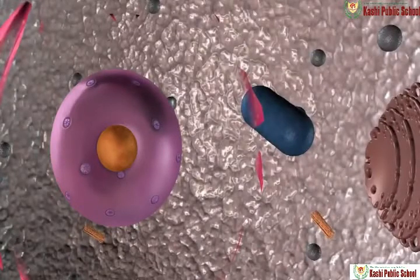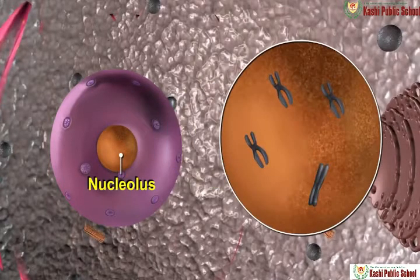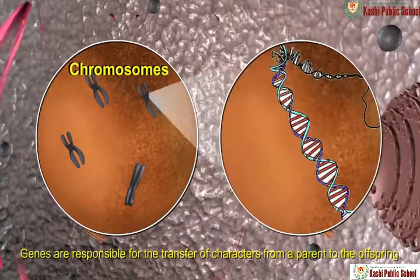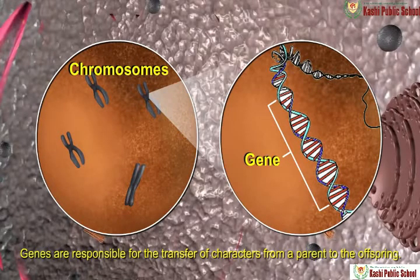Inside the nucleus, a spherical body is present. This spherical body is the nucleolus. Inside the nucleolus, some thread-like structures are present. These are called chromosomes. The chromosomes contain genes which are responsible for the transfer of characters from a parent to the offspring.